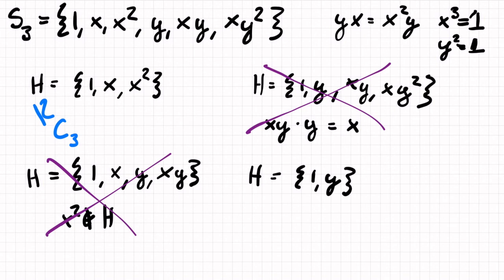And finally, very simply, we have just 1 and y. And y is its own inverse, so inverses are satisfied. As we marked before, we have the identity. And we also have closure, because the only way to multiply this is to multiply y times y, or 1 times y, or 1 times 1. And in each case, we'll either get 1 or y. So this group actually is going to be the same group somehow as C2.